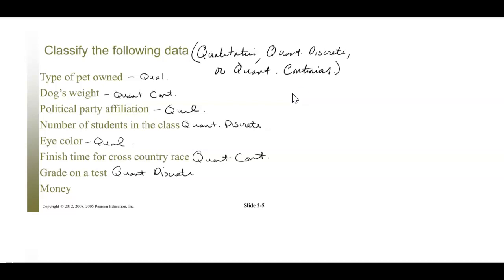Eye color is qualitative. Time is always continuous. Yes, we can count seconds, minutes, and hours, but between minutes there are infinitely many measurements, so time is continuous.